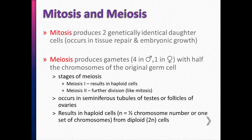Mitosis and meiosis are the cell processes used to divide cells. Mitosis produces two genetically identical daughter cells from the original cell. We use this all the time in tissue repair and growth, and we'll see a lot of mitosis for the embryo or fetus to grow.